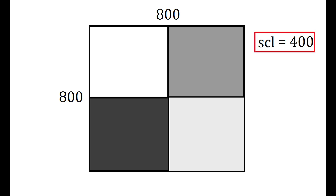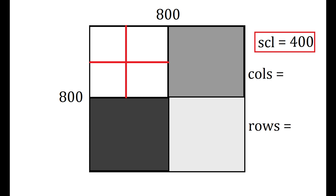We'll make a variable called 'scl' standing for scale. We'll set it to 400 — so it covers half the 800-pixel distance, giving only four rectangles drawn at that scale. We also want two other variables called columns and rows. Columns determines how far across (x-wise) we go before moving down a step, and rows determines how many y-steps until the canvas is filled.